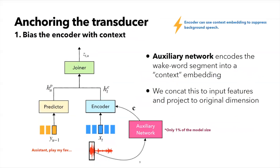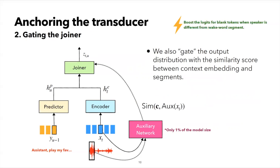We use two methods to perform anchored speech recognition with transducers. We add a tiny auxiliary network which consumes the wake word segment and generates a context embedding. This network is barely 1% of the original model size, so the increase in total footprint is negligible. We use this context embedding as additional input to the encoder, with the hope that it learns to suppress background speech in its output representation. We also compute per-frame similarity scores between the wake word segment and the mixed speech by computing embeddings for both, and use these scores to gate the distribution predicted by the joiner. The idea is that if the current speaker is different from the main speaker, the similarity score is low and we boost the prediction of the blank token.